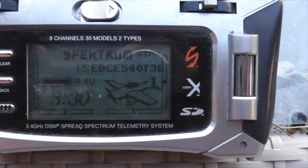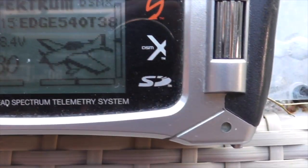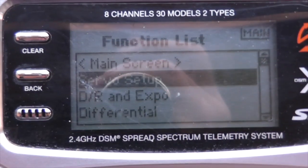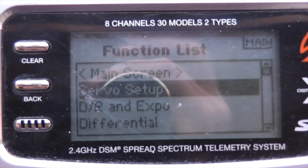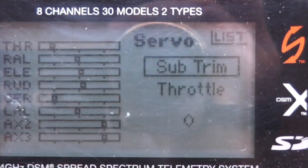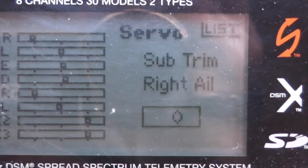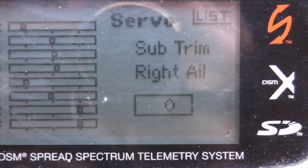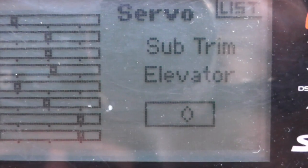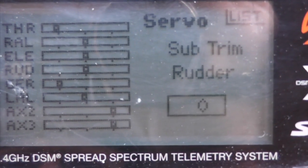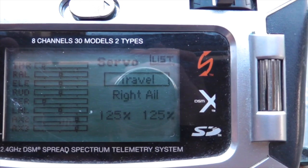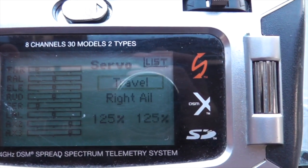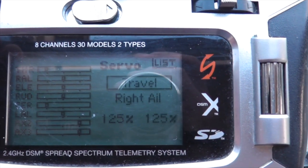Now I take the transmitter and I center the trim for the rudder and the aileron and the elevator. Make sure they're all centered perfectly. Then I go into the servo setup function, and then sub-trim. Then one by one I select each of the controls and put it at zero so there is no sub-trim. Then I go back and select the travel and I'm setting them all to 125%. That's just a starting point, we can adjust it later.